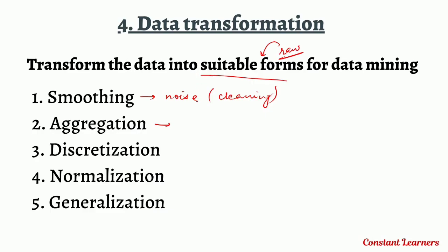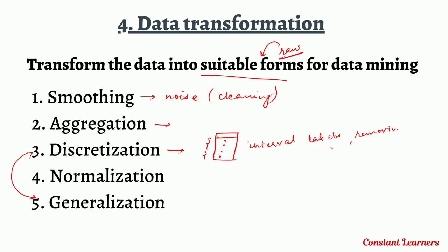Data discretization is an important concept to be discussed in the next video along with data generalization. In short, in data discretization, continuous or complete attribute values are replaced by interval labels, reducing the data in the attribute. When we remove details from the data, we are generalizing the data. Some details will be removed, but this generalized data is far more suitable for data mining.